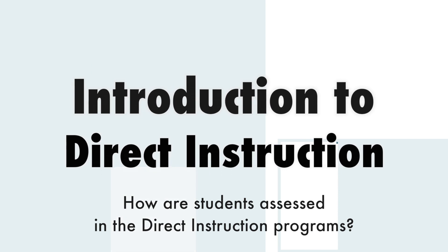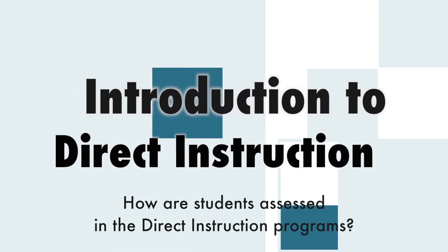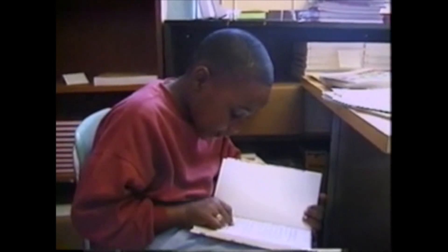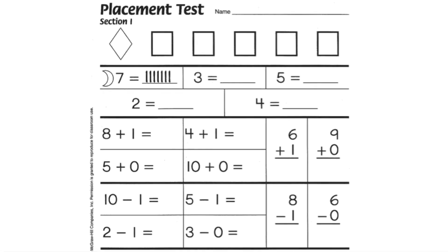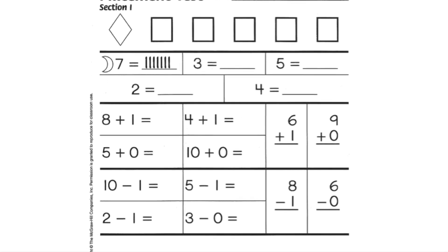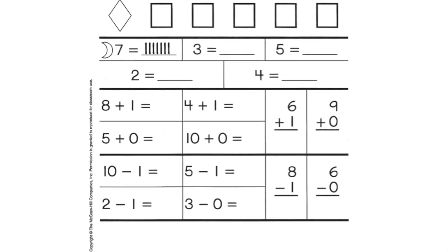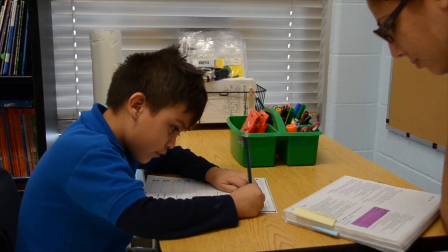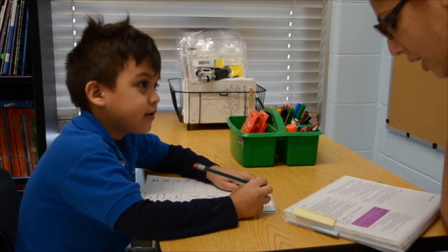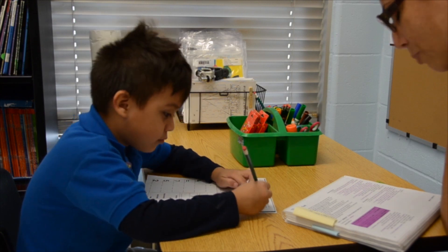How are students assessed in the direct instruction programs? Students are assessed through several different means to ensure they master program content as they receive instruction geared toward their skill level. The teacher's guides contain placement tests that provide an initial snapshot of students' skills. Students are tested in each subject area to determine which direct instruction program and level matches the student's skill repertoire.